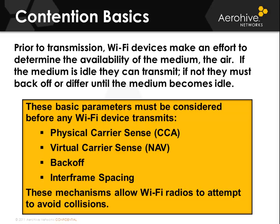The basic parameters that must be considered before any Wi-Fi device transmits are the physical carrier sense, which is a clear channel assessment; the virtual carrier sense, which is a network allocation vector; the backoff, which is waiting for other devices to complete their communications; and interframe spacing — the spacing between frames, acknowledgements, and the differential interframe spacing when the medium is idle. These mechanisms allow Wi-Fi radios to attempt to avoid collisions. If these mechanisms are not followed, there will be a lot of collisions, meaning the intended receiver would not acknowledge the transmission and the original transmitter would have to retransmit.